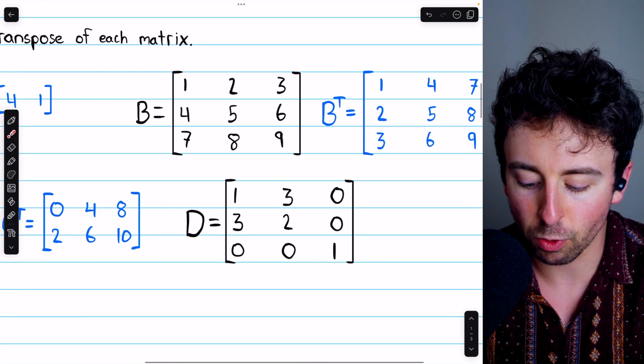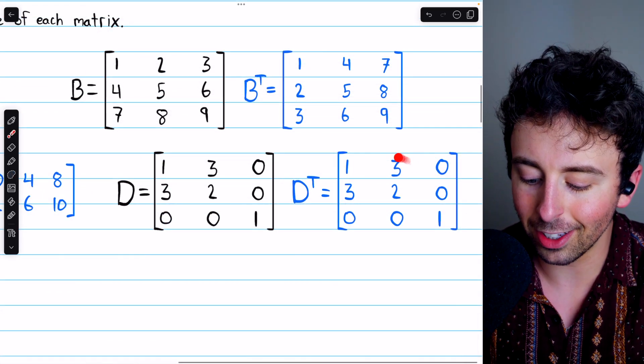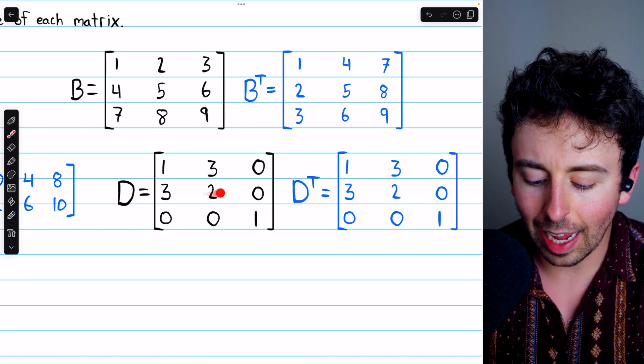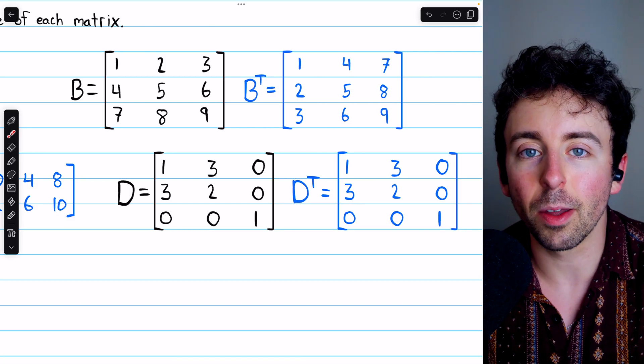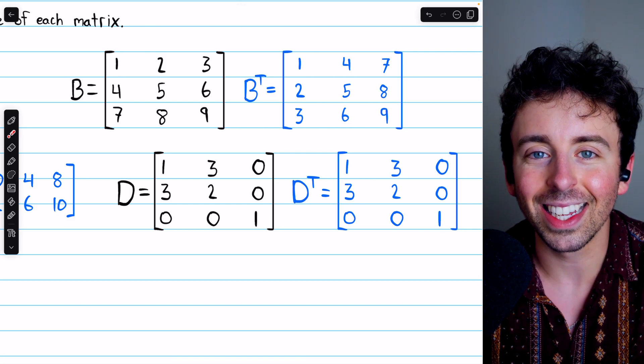Last example, matrix D, let's find its transpose. D transpose looks like that. You can see the first row there as the first column, the second row as the second column, and so on.